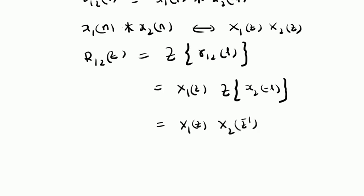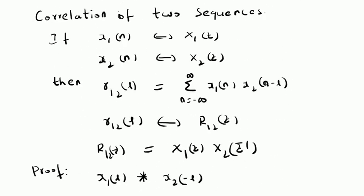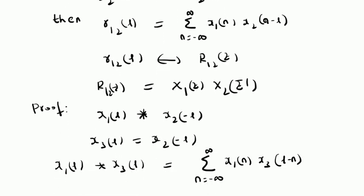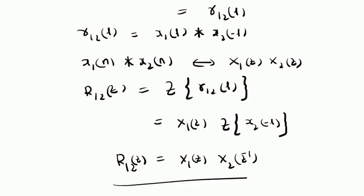Since we have time reversal, Z becomes Z inverse. So the Z-transform of the correlation R12 of Z is the product of X1 of Z and X2 of Z inverse. That is the proof for this property. To summarize: we have looked at the equivalent operation for correlation in time domain — correlation can be defined as convolution of the first signal with the time-reversed second signal. And in the Z-domain, the Z-transform of this correlation is the product of X1 of Z with X2 of Z inverse. Thanks for watching.